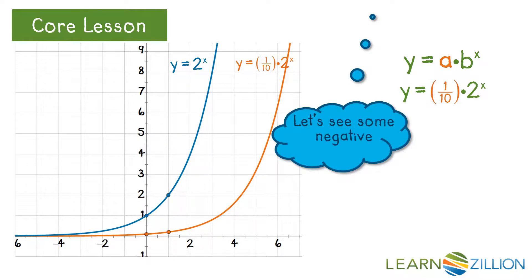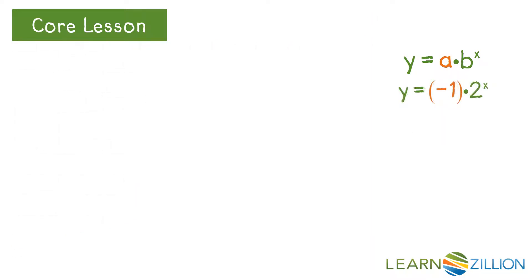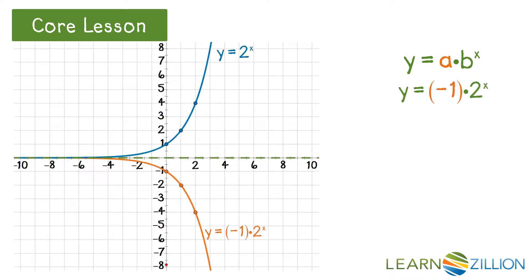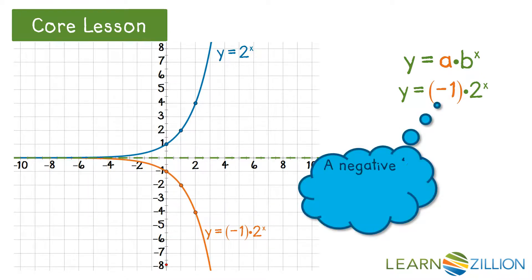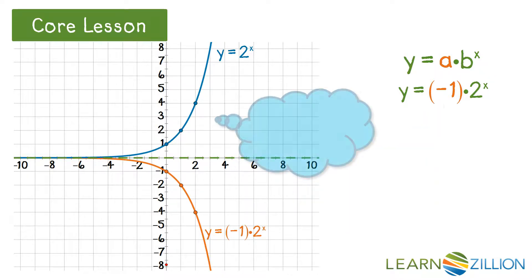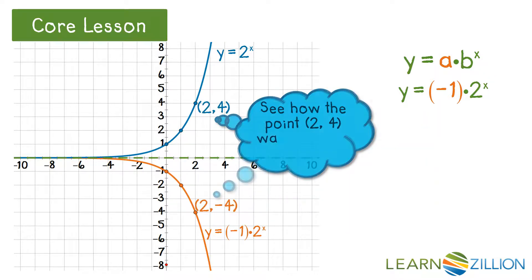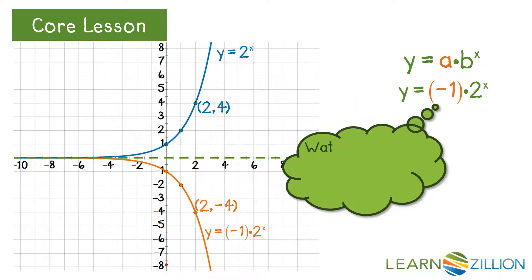Let's see what happens if a is negative. If we begin with negative 1, we see that the graph has been reflected. This is because all y-values are opposite of the parent function. Notice how the point has been reflected. Watch the effect of changing this.